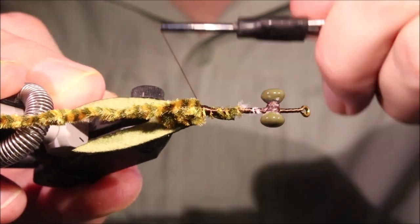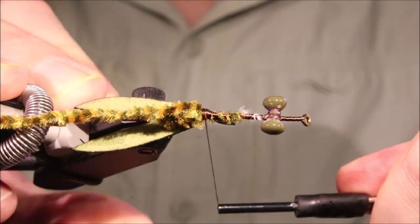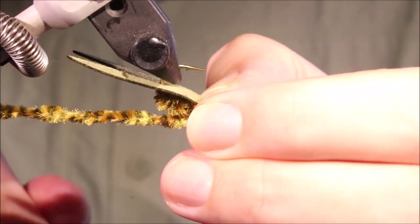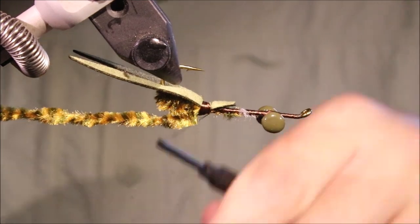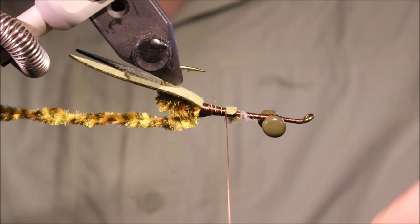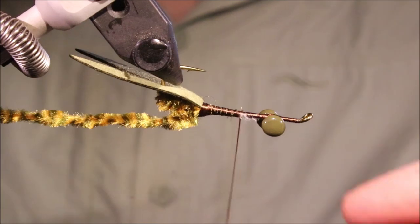Then I like to come right back so that I've secured it right down to that bumper chenille, and then just take my thread forward, touching wraps all the way, securing that in place.